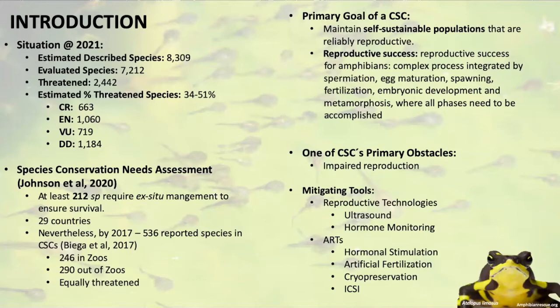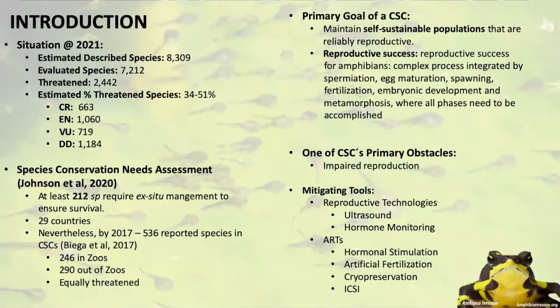The primary goal of a captive survival assurance colony is to maintain a self-sustainable population that is reliably reproductive. For that we need reproductive success. In amphibians, reproductive success is a complex process involving permeation, gamete maturation, spawning, fertilization, embryonic development, and metamorphosis — all phases must be accomplished.